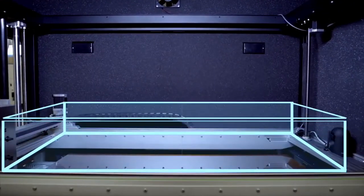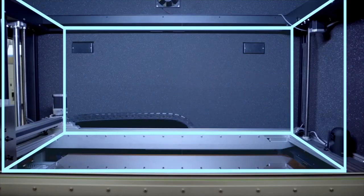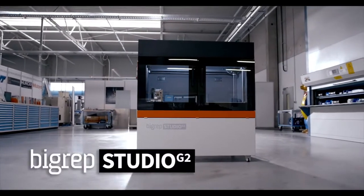The G2 has a build volume of one meter by a half meter by a half meter, making it BigRep's slimmest offering to fit into any office or factory floor.